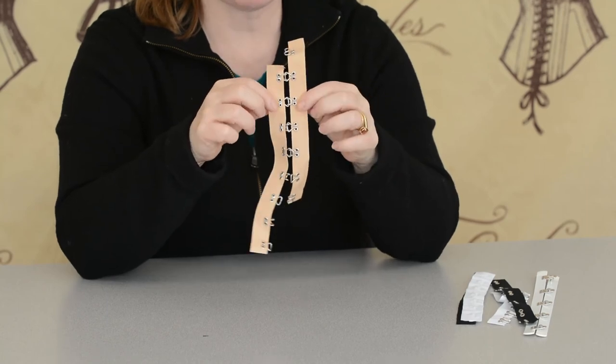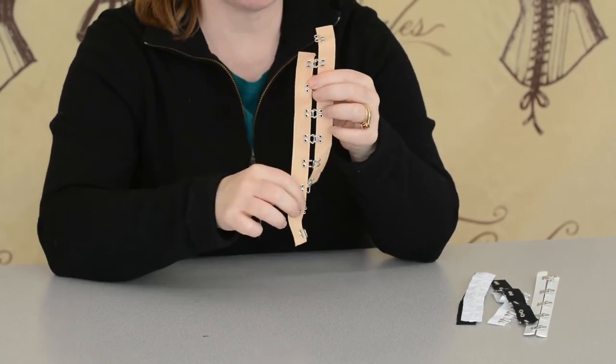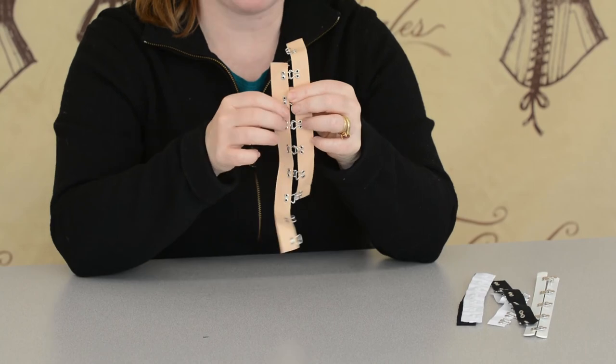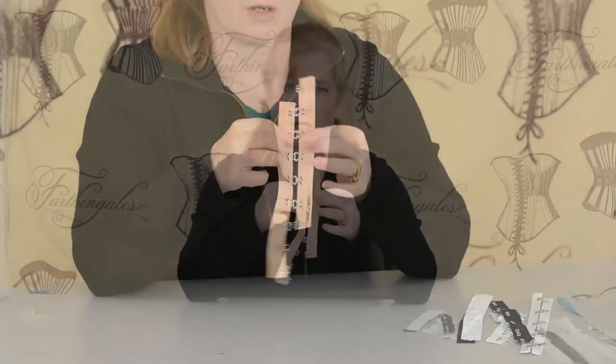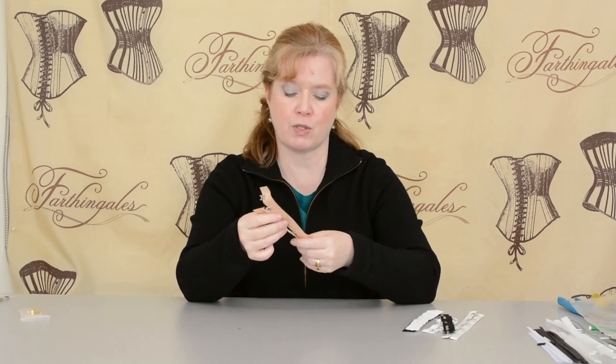If it's sewn on properly, you still should have a bone down behind these so that there's not more stress on one than another. The bone distributes the stress.